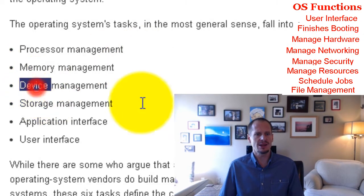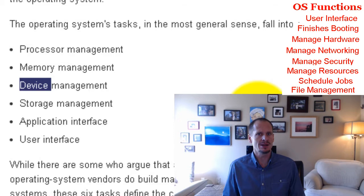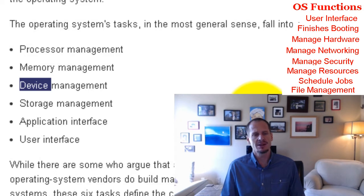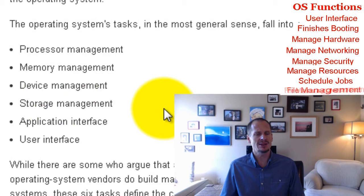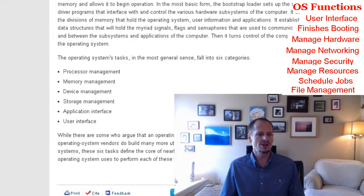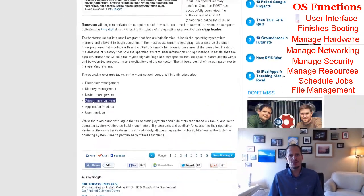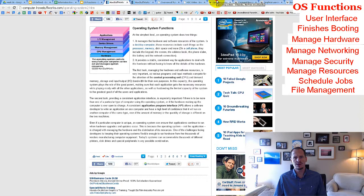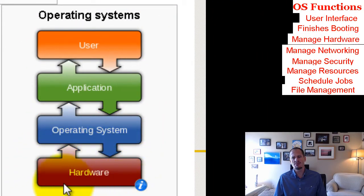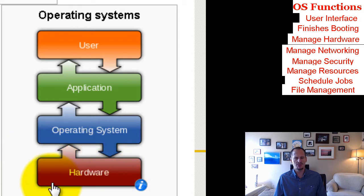Device management is a general category covering all hardware — printers, monitors, USB cameras, microphones, speakers, DVD drives, flash drives — the operating system manages all that hardware. Storage management covers file systems like NTFS and FAT32, what storage is available, and how you access it. It really comes down to this: the operating system is written for hardware, manages hardware, and makes hardware run — acting as a traffic cop between application software and the hardware.